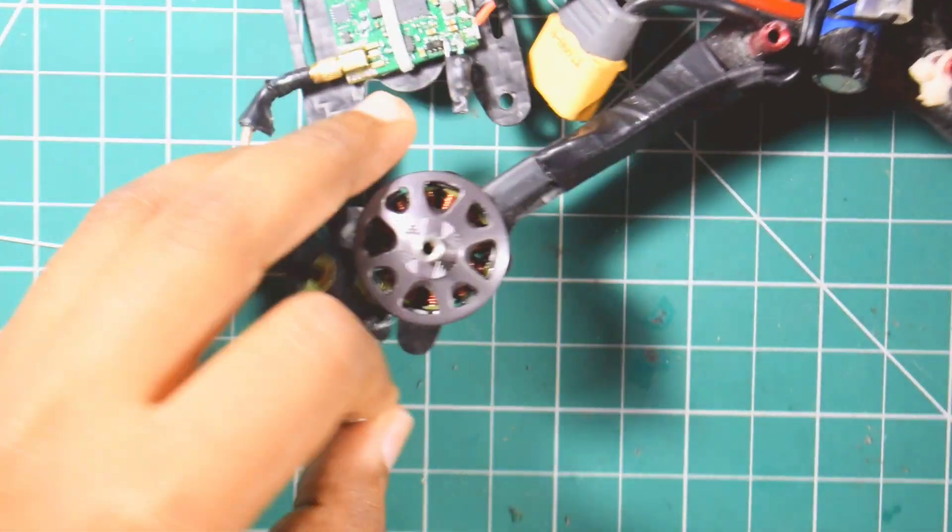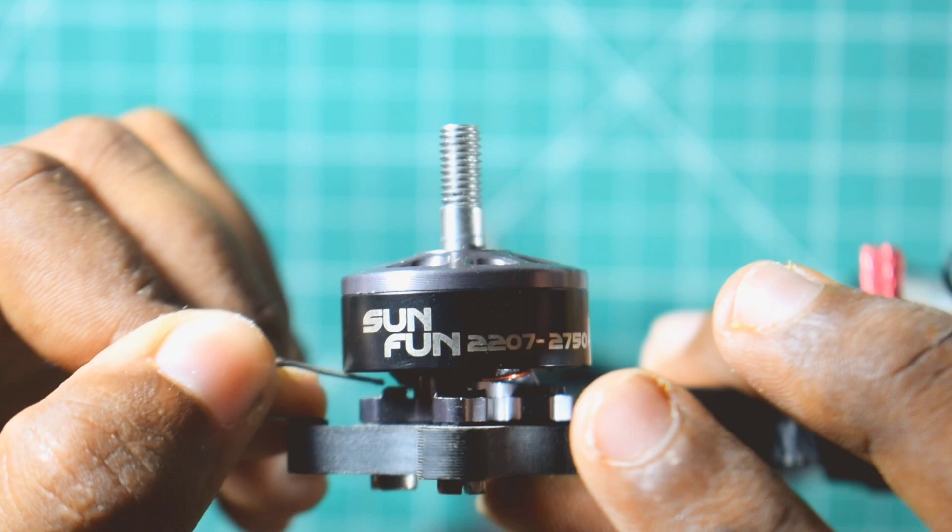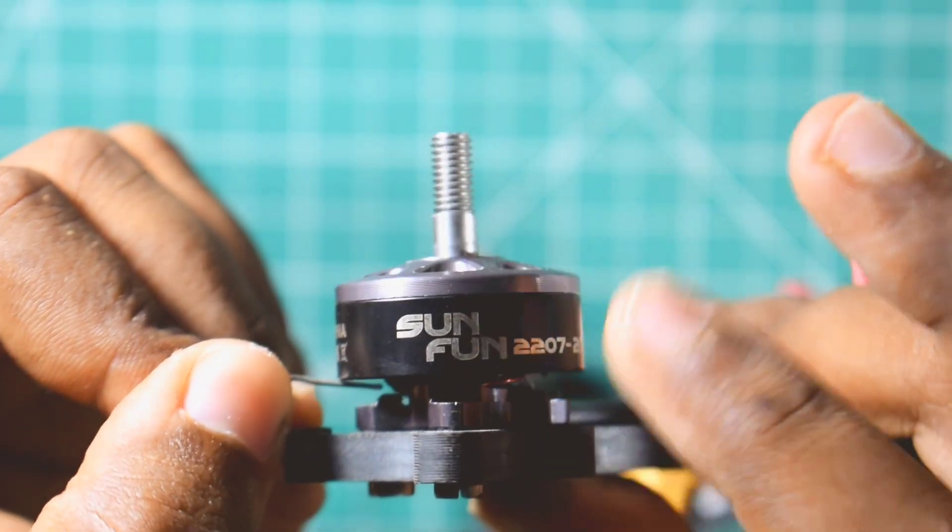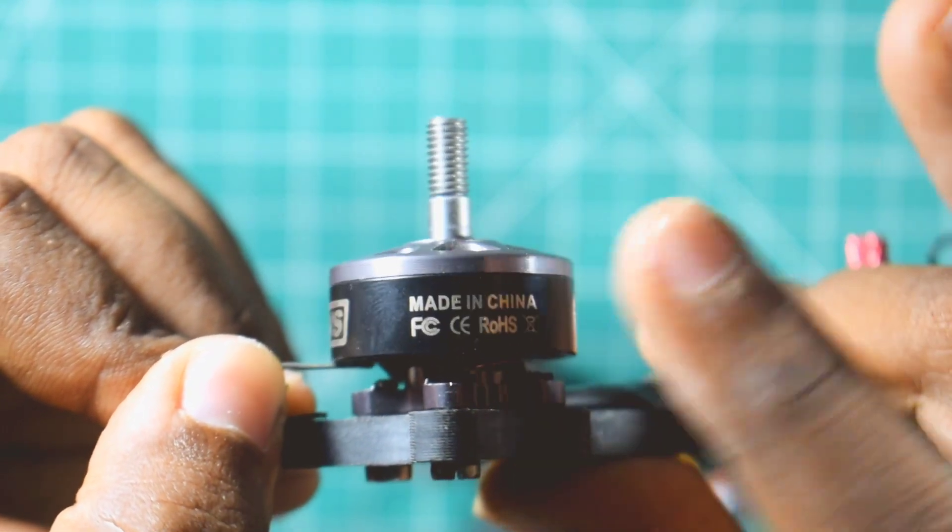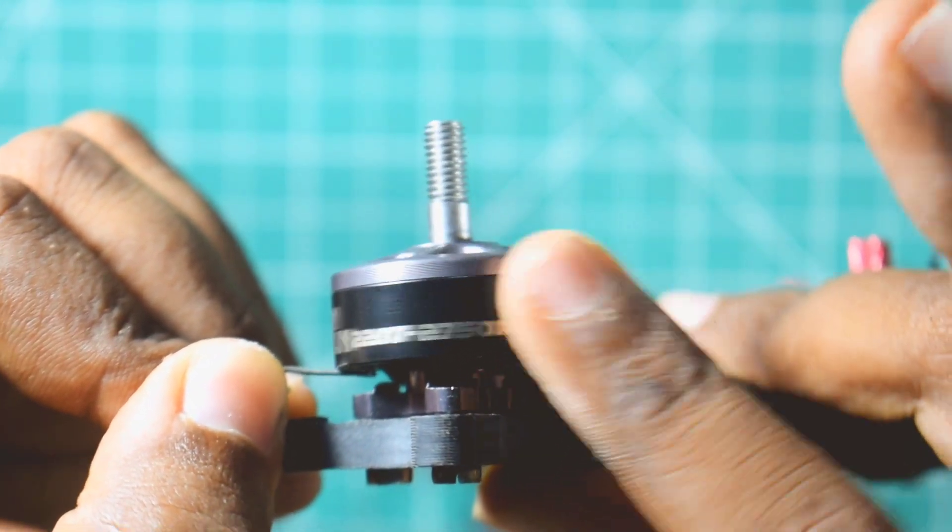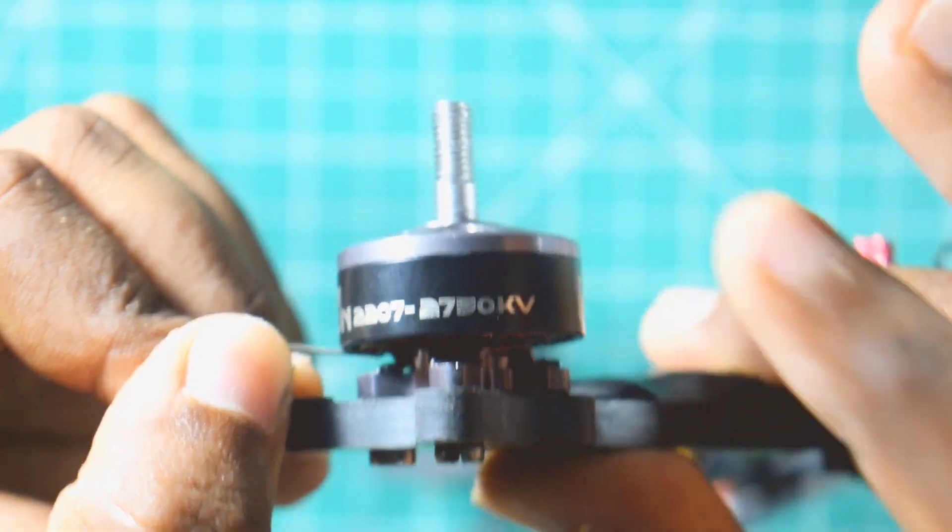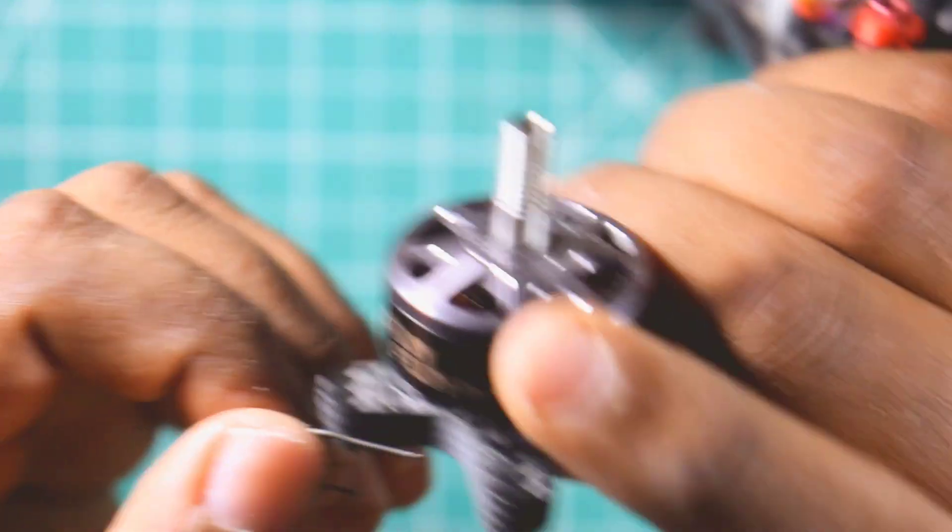So this right here is a motor which has a bent shaft. We check it and right there you could see the wire is coming down and going up. So that right there is a bent shaft.